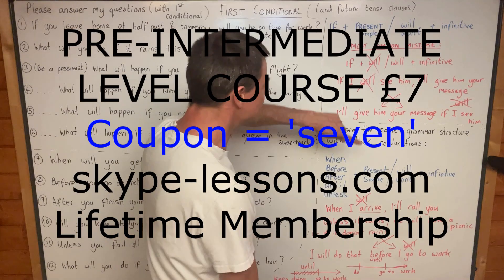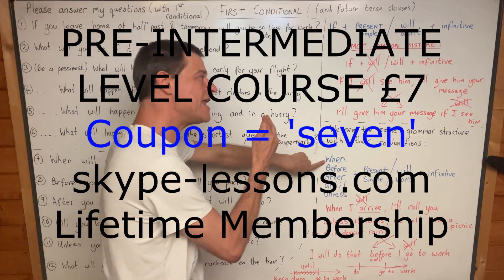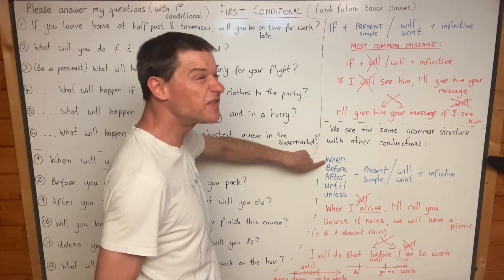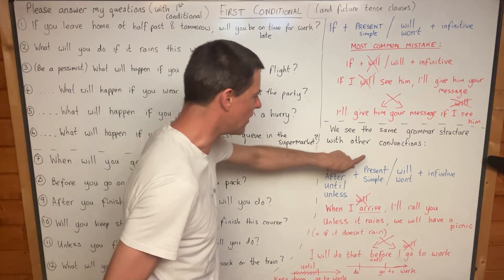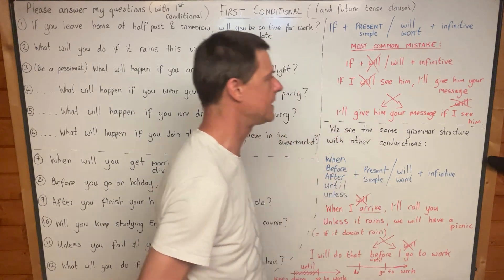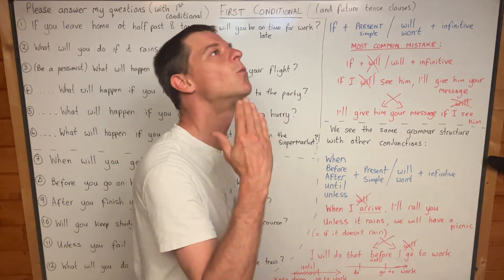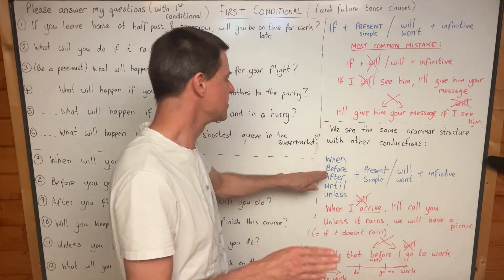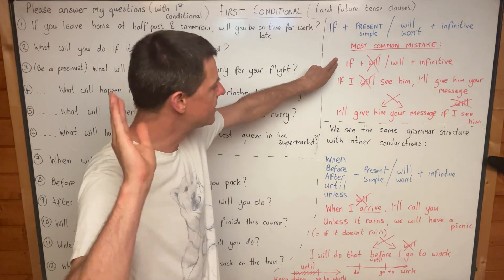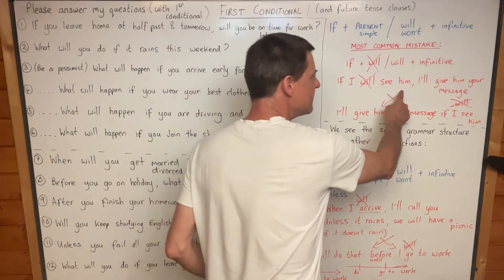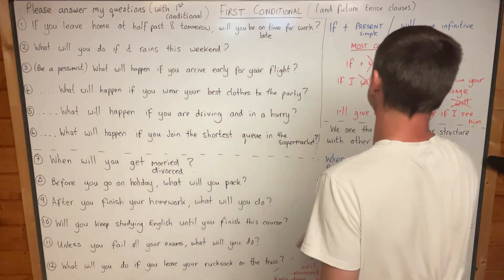Even if we change the word 'if' for 'when' — when I see him, I will give him your message — still, we don't use will after the when. We say 'when I see him' in present simple, then 'I will tell him.' In many languages you say 'when I will see him,' but that's not correct in English. Be aware of the most common mistake and don't make it. You will answer my questions using first conditional in a second.